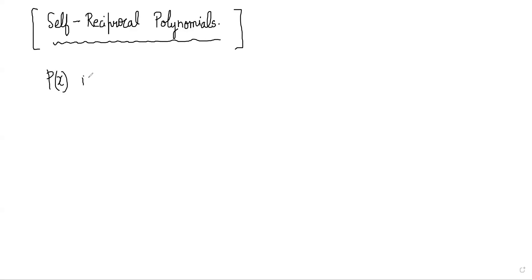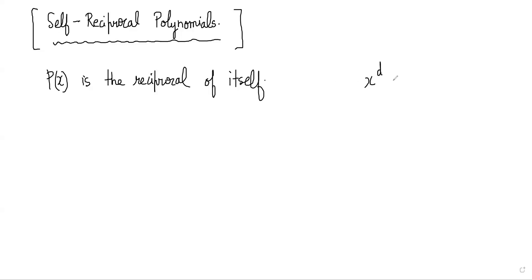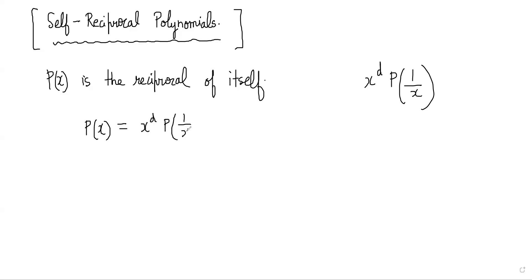A polynomial P(x) is its own reciprocal — that is the situation for a self-reciprocal polynomial. As we have seen in the previous videos, we can find the reciprocal of a polynomial by taking x^d * P(1/x), where d is the degree of P. So for self-reciprocal polynomials, the condition is P(x) = x^d * P(1/x).